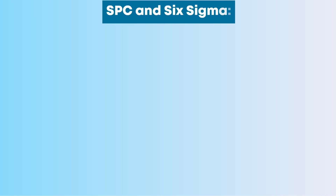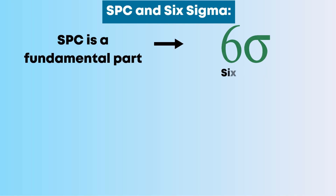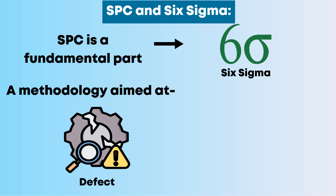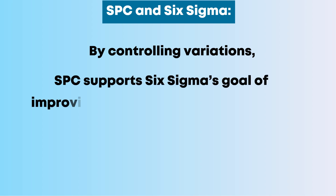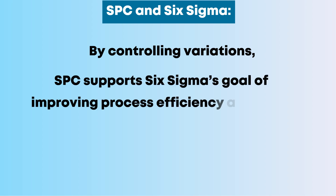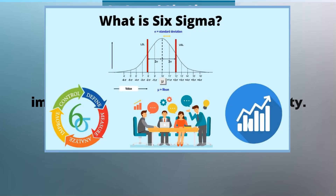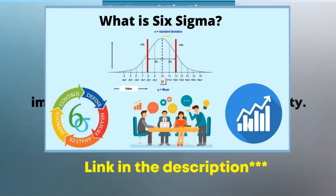SPC and Six Sigma: SPC is a fundamental part of Six Sigma, a methodology aimed at reducing defects to near zero. By controlling variations, SPC supports Six Sigma's goal of improving process efficiency and quality. Six Sigma has been discussed in detail in a separate video — check the link in the description box.